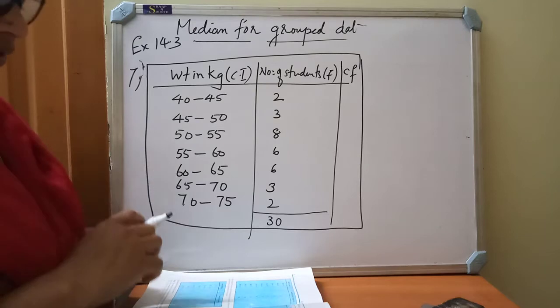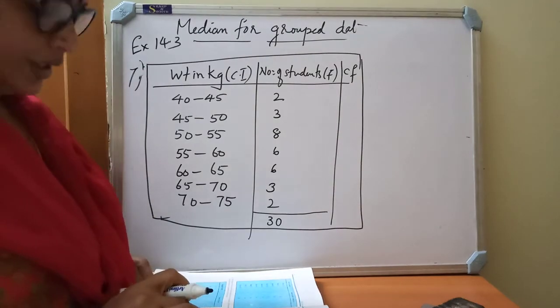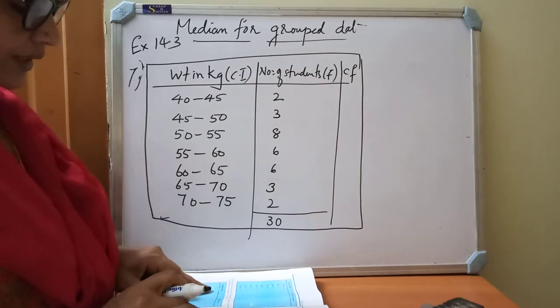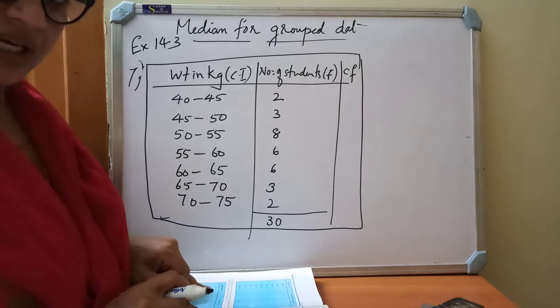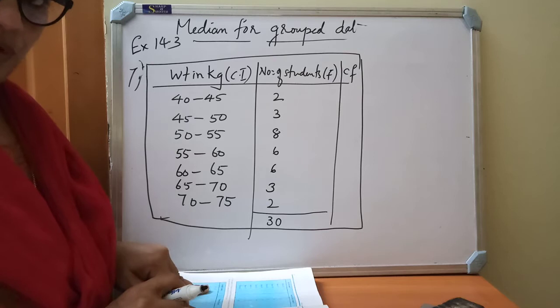See children, for question 4.1, 5.1, 6.1, 3 homework. For 4.1 they are given the data in an inclusive form, class interval in inclusive form. So first make it in exclusive form.